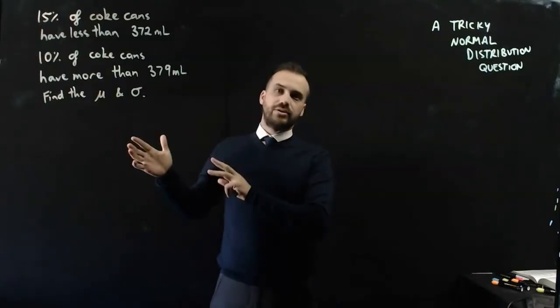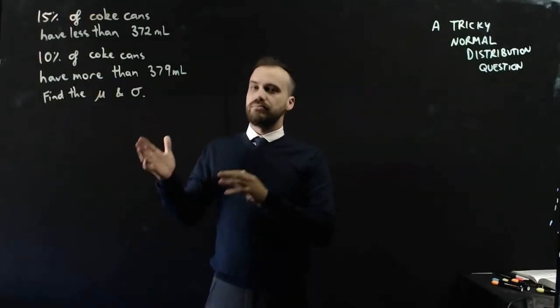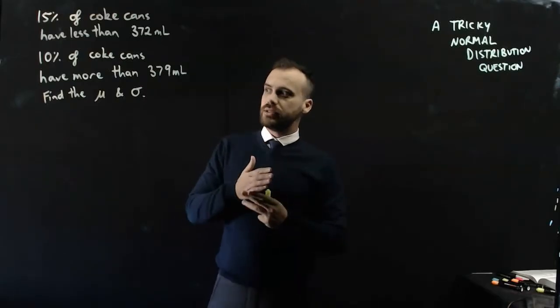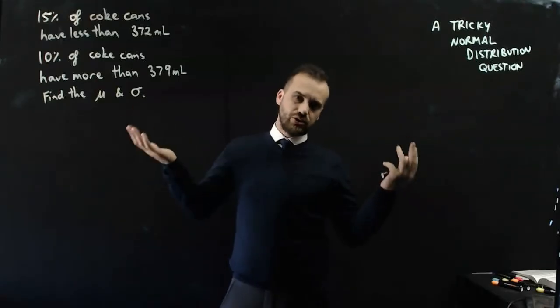15% of Coke cans have less than 372 ml of liquid in them. 10% of Coke cans have more than 379 ml. Find the mean and standard deviation of this, assuming that they're normally distributed.